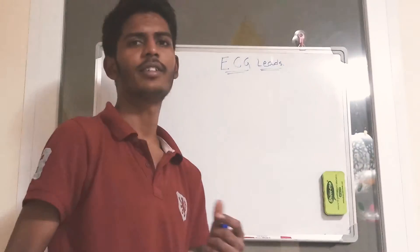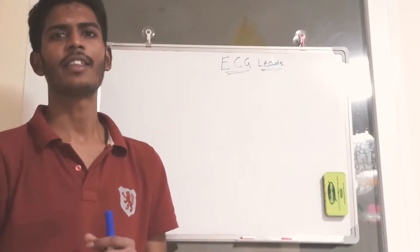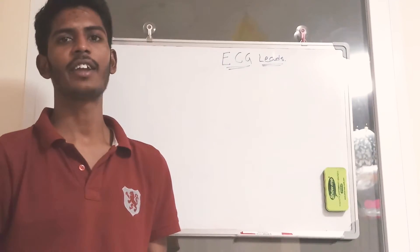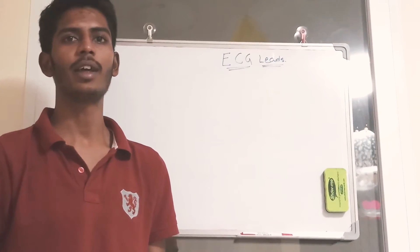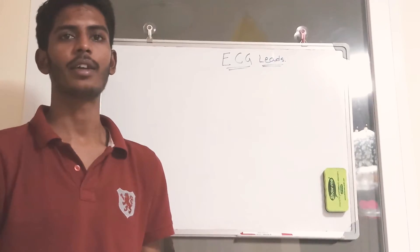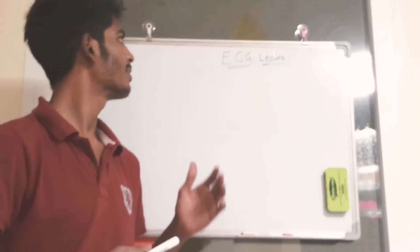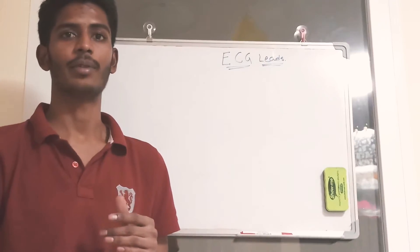Hi friends, today we'll discuss ECG leads. So what are these ECG leads? ECG leads are nothing but the electrodes which are connected on a human body surface to record the electric activity of the heart. We'll study what type of leads are they.